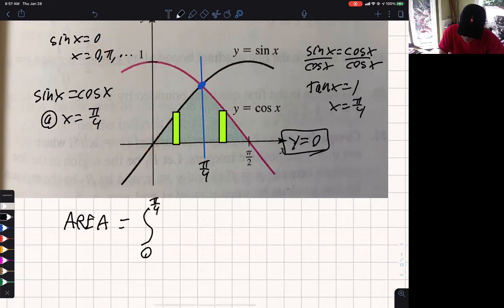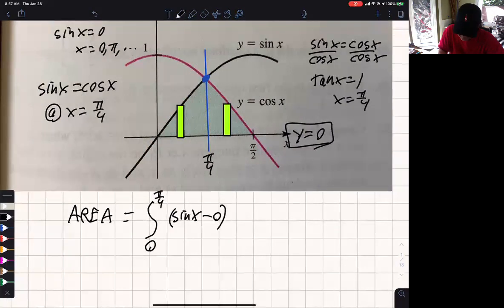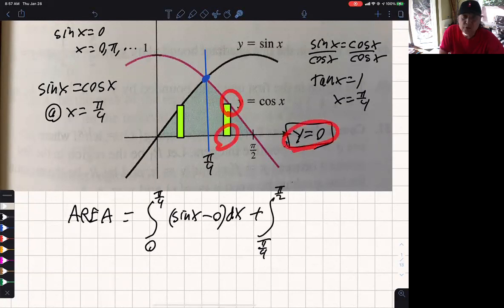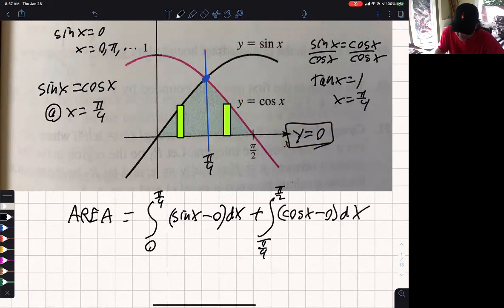We're going to stop at pi over 4, because at this point, those are the rectangles, black minus the x-axis. So what's the black function? It's going to be sin x. What's the x-axis? 0. And then I have to add to that all the rectangles starting at pi over 4, ending at pi over 2. So it's going to be pi over 4 to pi over 2. And what's the top function? It's cosine x, and the bottom function is y equals 0. So it's going to be cosine x minus 0 dx. And then it's just a matter of finding the antiderivatives and applying the fundamental theorem. And that's problem number 15.